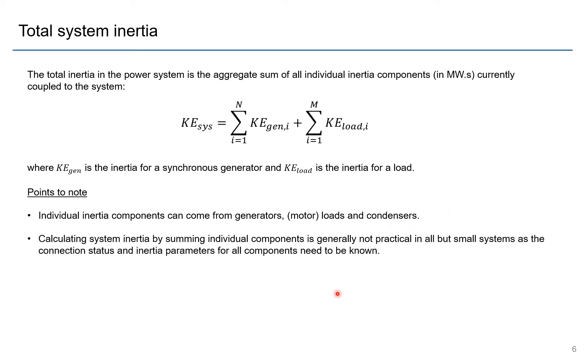Now calculating the system inertia by this method of summing up all the individual components is generally not all that practical in anything but very small systems where the connection status and the inertial parameters for all the components are known. And we'll get to this a bit later on in the estimation of inertia, but suffice to say that it is difficult in large systems particularly to estimate what the load inertia in the system is.